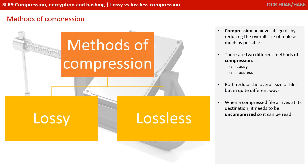Compression achieves its goals by reducing the overall size of a file as much as it can. There are two different methods for this: lossy compression and lossless compression. Both reduce the overall size of files, but in quite different ways. When a compressed file arrives at its destination, it needs to be uncompressed so it can be read again.